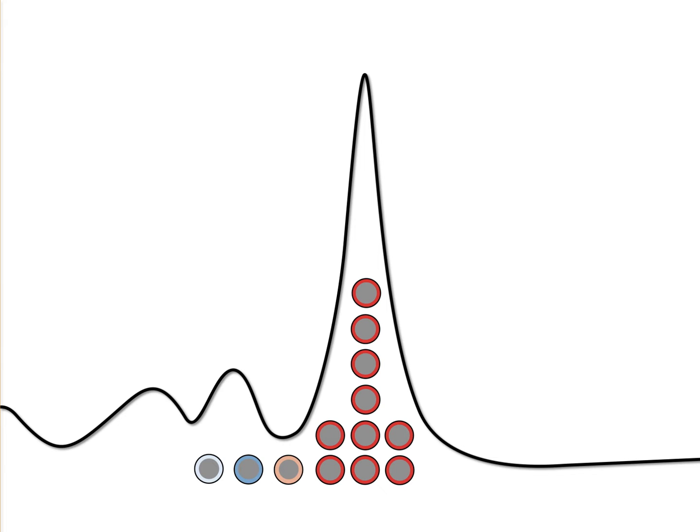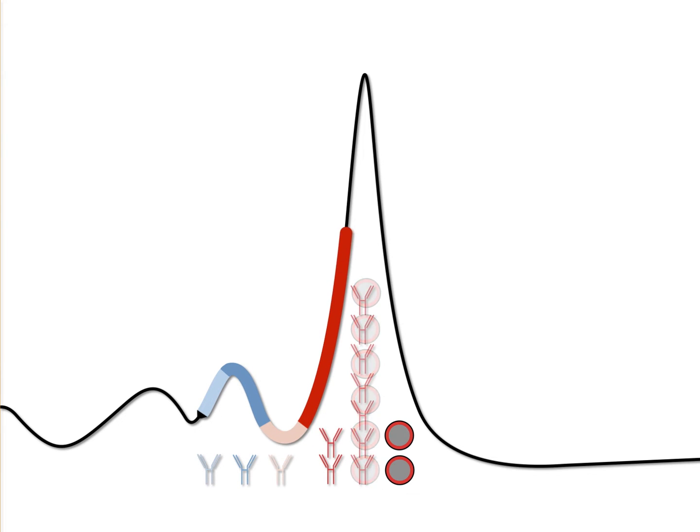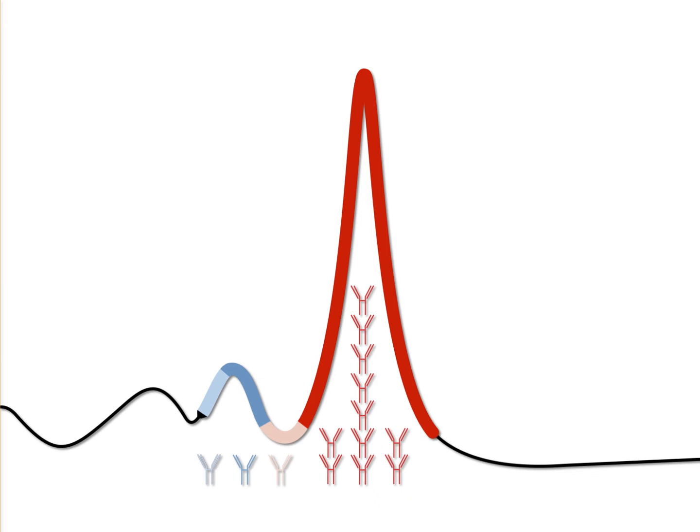In plasmacytoma, a single B lymphocyte is transformed. From this cell, a plasma cell clone is generated that releases immunoglobulins of identical structure and electrophoretic mobility, shown in red, into the blood. The slender peak in the electropherogram reflects this fact. The phenomenon is known as monoclonal gammopathy.